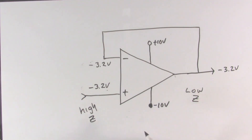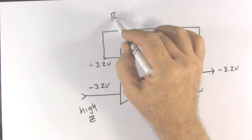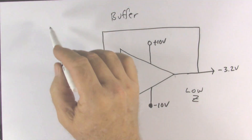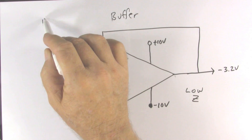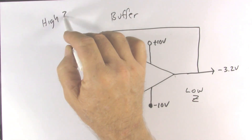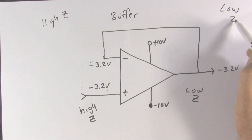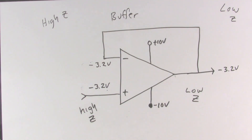So this makes what's called a buffer circuit between a high impedance and a low impedance. That's what we use a voltage follower for. The voltage follower is also known as a unity gain amplifier because there's no gain between the input and the output, only an impedance match.